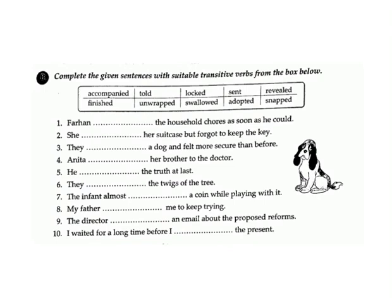Exercise B: Complete the given sentences with suitable transitive verbs from the box below. Options: accompanied, told, locked, sent, revealed, finished, unwrapped, swallowed, adopted, snapped. 1. Fahan dashed the household chores as soon as he could. Answer: finished.